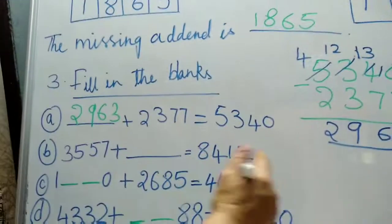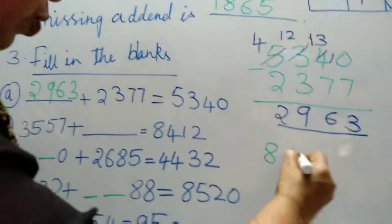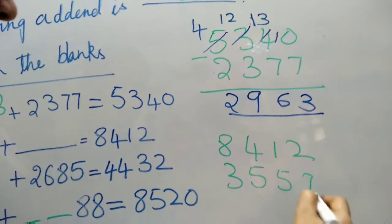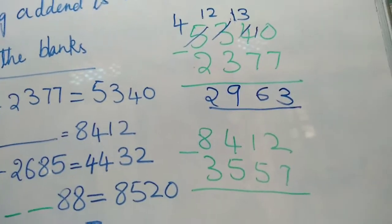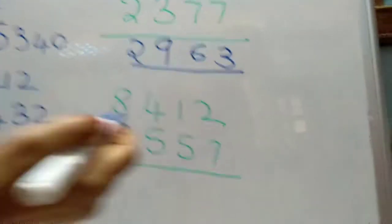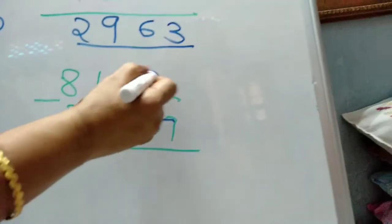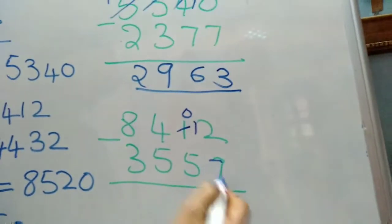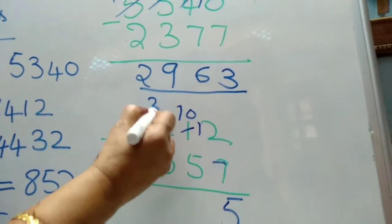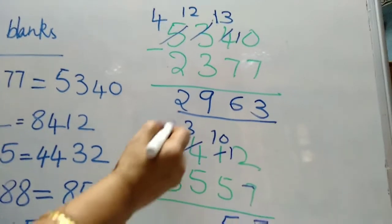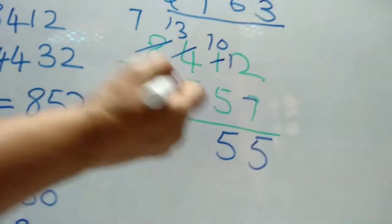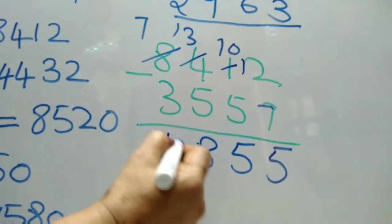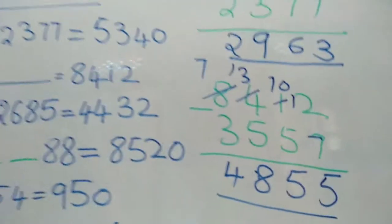Again you do this one. 8, 4, 1, 2 minus 3, 5, 5, 7. Subtract. Now borrow, this is 12. From 12, 7 goes 5. From 10, 5 is 5.